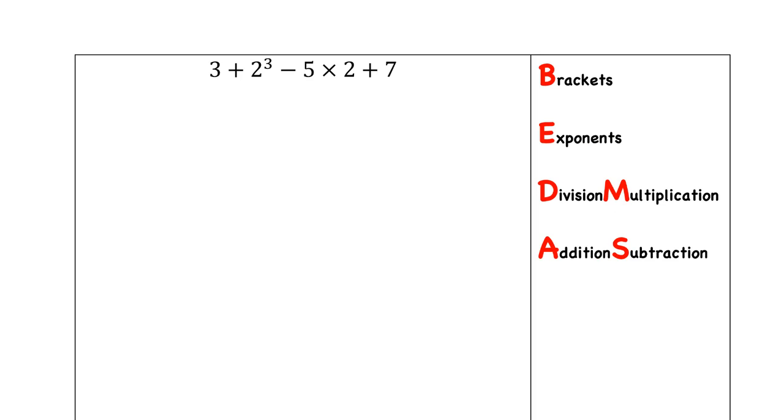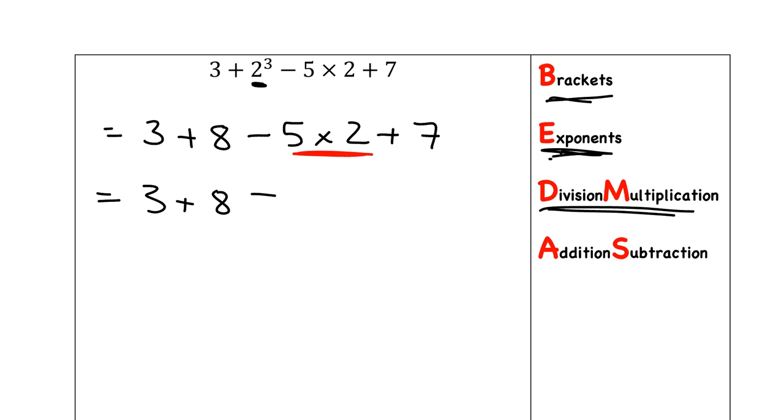Okay, here's an example for us to look at. BEDMAS tells us first look for brackets, well there aren't any. The next thing we look for are exponents, so we need to deal with these exponents first. So our next line will be 3 plus 2 cubed is 2 times 2 times 2, which is 8 minus 5 times 2 plus 7. The next thing that we do according to BEDMAS is any division or multiplication. Well, we've got multiplication over here, so that's what we need to do next. So we will have 3 plus 8 minus 5 times 2 gives me 10 plus 7.